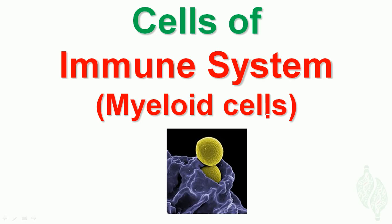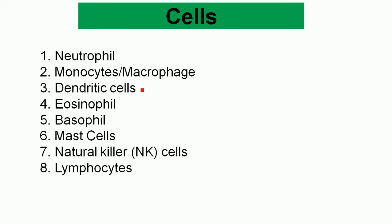Today I am going to show the cells of the immune system. First I will talk about the myeloid cells. In immunology, the major renowned cell types are neutrophils, monocytes, macrophages, dendritic cells, eosinophils, basophils, mast cells, natural killer cells, and lymphocytes — these are the major cell types in the immune system.